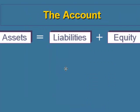On this slide, you'll see the accounting equation. The accounting equation basically says that assets have to equal liabilities plus owner's equity.